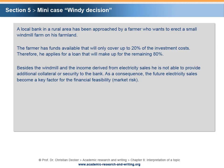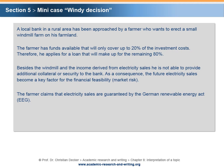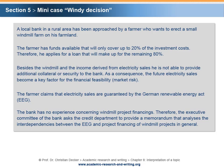As a consequence, the electricity sales become a key factor for the financial feasibility. The farmer claims that electricity sales are guaranteed by the German Renewable Energy Act, the EEG. The bank has no experience concerning windmill project financings. Therefore, the executive committee of the bank asks the credit department to provide a memorandum that analyzes the interdependencies between the EEG and project financing of windmill projects in general.